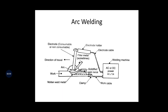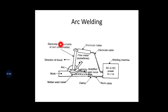The arc welding line diagram is important from the exam point of view — you have to draw this diagram. This shows the workpiece and the electrode holder. The electrode can be consumable or non-consumable. Consumable means it will be consumed and you have to replace it with a new one. Non-consumable means it will never be consumed — like a tungsten electrode, which can be used for any number of workpieces.